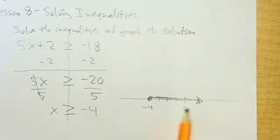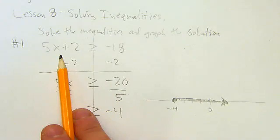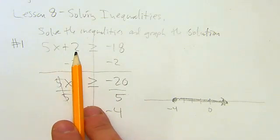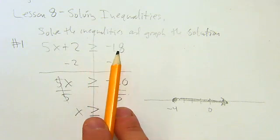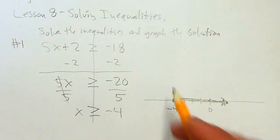Try it out. Plug in 0. 5 times 0 is 0, plus 2, so 0 plus 2 is 2. Is 2 greater than or equal to -18? Sure. So anything over here, if you plug it in, makes it true. Try plugging in -5.